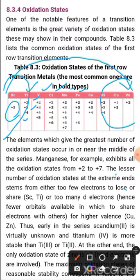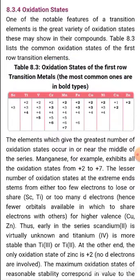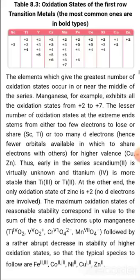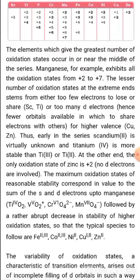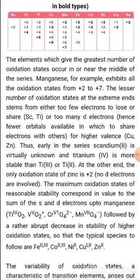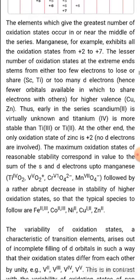At the extreme ends, the number of oxidation states is fewer — either they have very few electrons to lose or share, like scandium and titanium at the start, or they have too many d electrons to share or lose, like copper and zinc at the end. Hence, few orbitals are available in which to share electrons with others for higher valence.